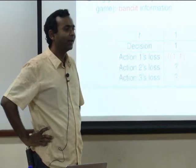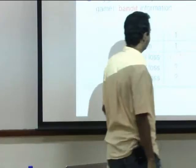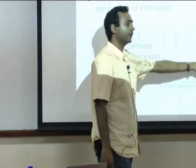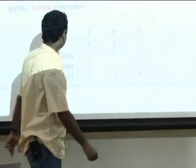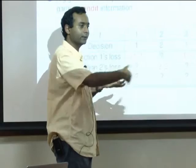We will only know specific coordinates — for example, coordinates 1 and 3 if we played those actions. The state or history you accumulate is essentially one coordinate per time. You will not even be able to see the others. But you can still hope to compete with the best possible: what would happen if you basically only stuck with action 1 or only stuck with action 2 or only stuck with action 3 for the entire duration of time.